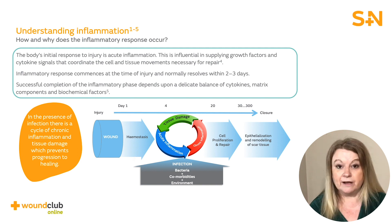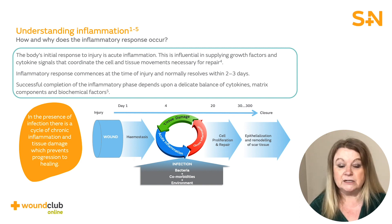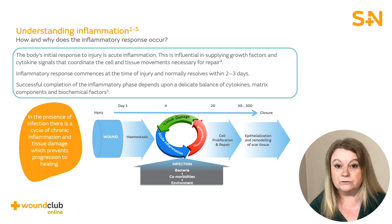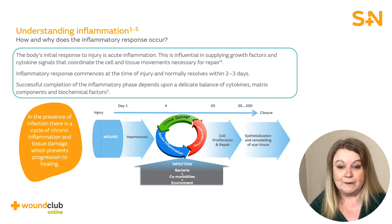In the diagram you can see that in the presence of infection, the wound gets stuck in a cycle of chronic inflammation and tissue damage, which prevents the wound from healing. A variety of factors influence this cycle of inflammation — for example, the presence of bacteria, patient comorbidities, and factors from the environment.